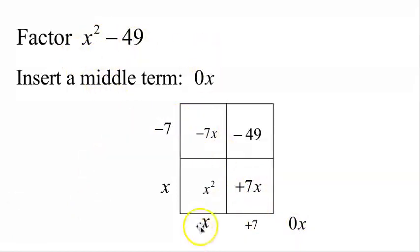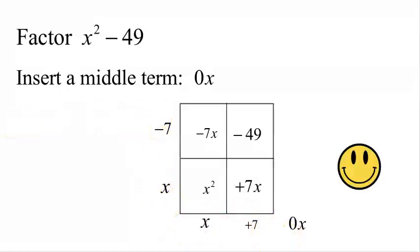Reading the results: x plus 7 is one of the factors, x minus 7 is the other factor. We are successful — that's our answer: x minus 7 times x plus 7.